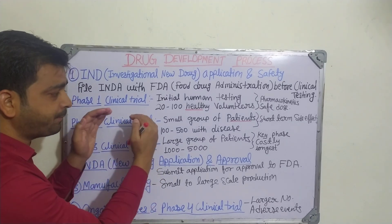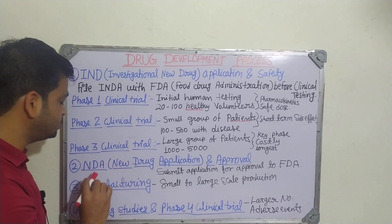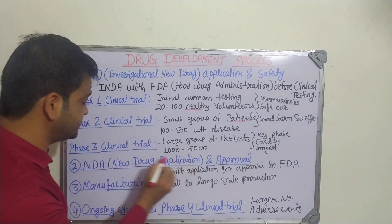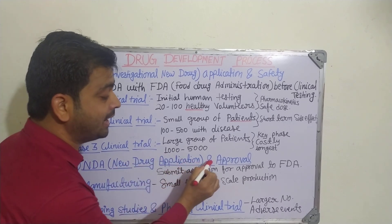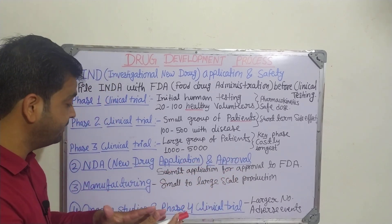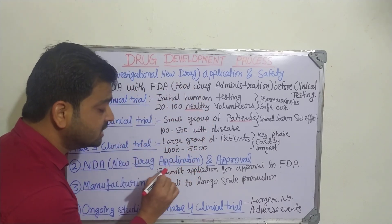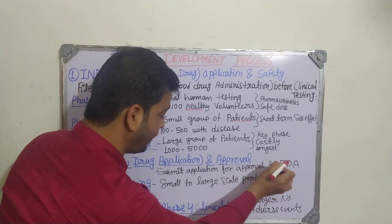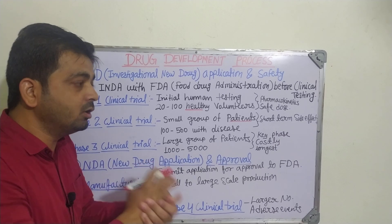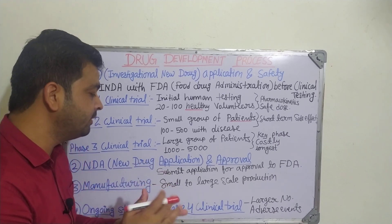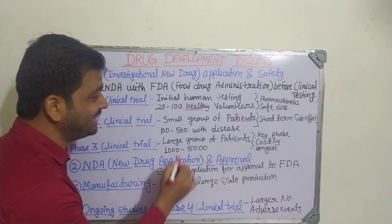After passing the particular molecule through Phase 1, 2, and 3, it has to go for New Drug Application — NDA — and approval. Again, the FDA plays a role; we have to submit all data from the three trials and submit the application for approval to FDA. Once the FDA is satisfied with the data evidence generated from human volunteers, it will approve the drug and it will go for manufacturing, scaling up from small scale to larger scale production for marketing purposes.